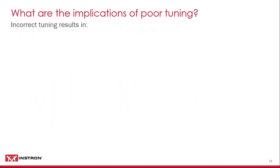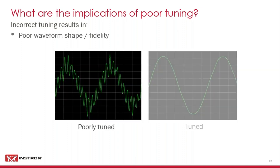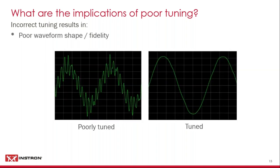What happens if you don't tune, or tune poorly? One implication of poor tuning is a poor waveform shape or fidelity. This is bad because you're not getting the results for the test you're actually trying to replicate — a lot of fatigue testing simulates real-world examples. If your waveform looks like the distorted one when you're asking for a clean sine wave, you're not simulating what you're asking for properly, the results might not be valid, and you may have to completely redo your batch of testing. In this case the control loop is over-tuned, constantly overshooting and undershooting to try to achieve that nice smooth sine wave.